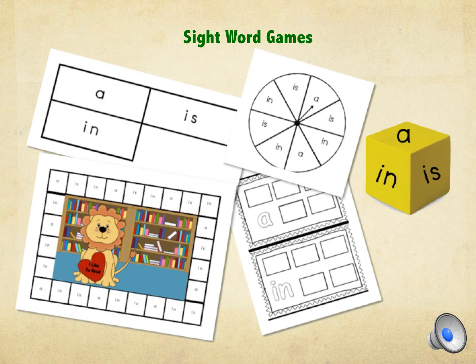Sight word games include draw-and-say cards, spin-say-and-print activities, and a game board where the students roll a dot and move that many spaces, saying the sight word they land on.